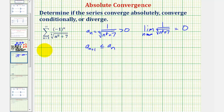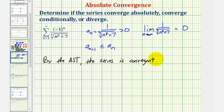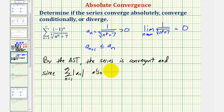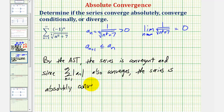To summarize: by the alternating series test, the series is convergent, and since the summation of the absolute value of a sub n also converges, the series is absolutely convergent. I hope you found this helpful.